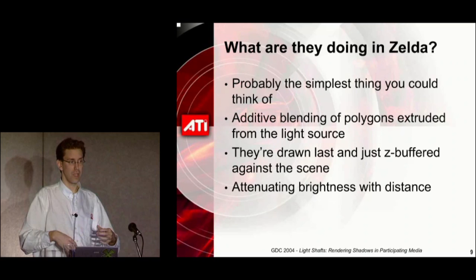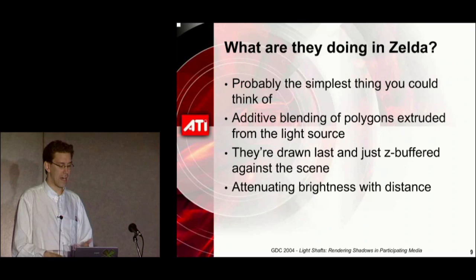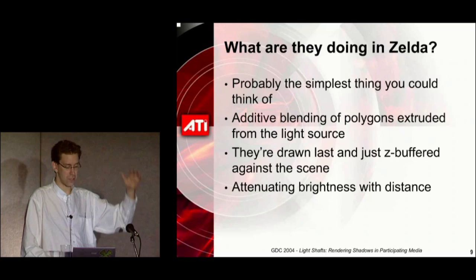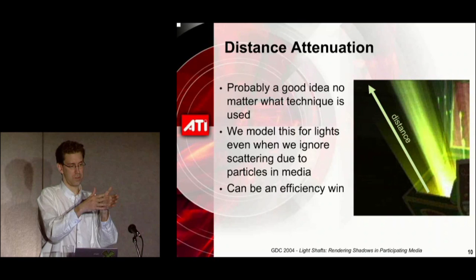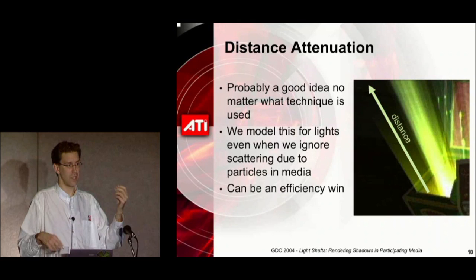They're drawn last and Z-buffered against the scene, and they attenuate a little bit so they fade out as you go. Distance attenuation is something we naturally do with lights anyway — it's a natural property of lighting, as the solid angle of the light kind of gets smaller as you get further away.